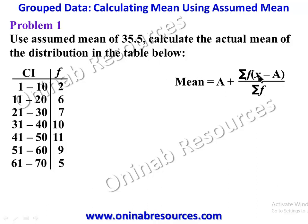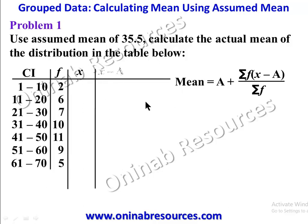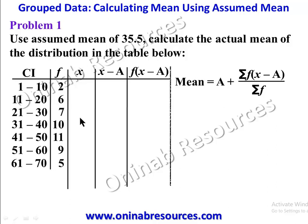For Problem 1, we use an assumed mean of 35.5 to calculate the actual mean of the distribution. We expand the table to include column x, which is the mid-value of every class interval, then x minus a, and finally f times (x minus a). To get the mid-value, we add the lower and upper class interval boundaries and divide by 2.